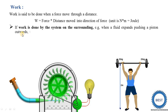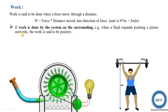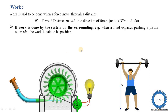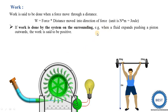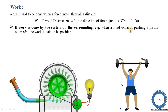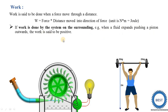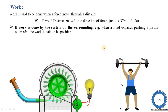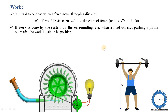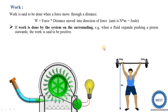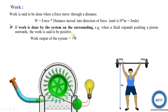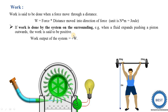If work is done by the system on the surroundings, it is considered positive work. Another example of positive work is when a fluid expands, pushing a piston outwards in a piston-cylinder arrangement — we achieve some output work, which is called positive work. So, work output of the system is considered positive: when the system gives output in the form of work, it is positive.